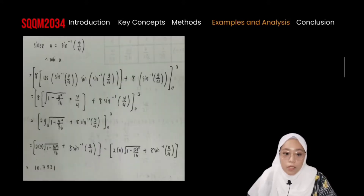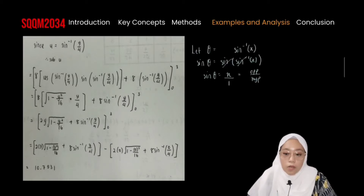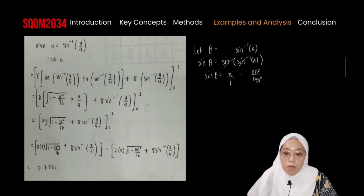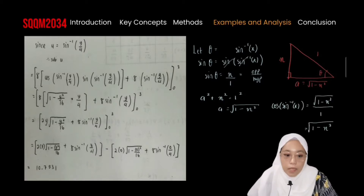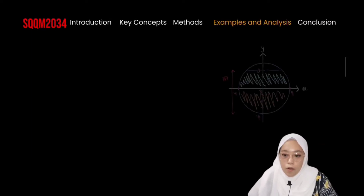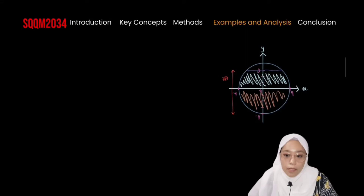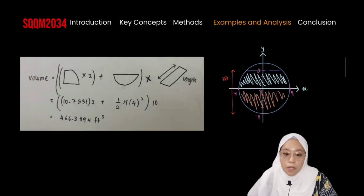Since u = sin⁻¹(y/4), we substitute back into the calculation. We found that the expression involves sin⁻¹(y/4) and cos. Using the inverse formula, we let sin θ = x/a and apply the Pythagorean theorem, where sin = opposite over hypotenuse. We draw the triangle and find the adjacent side: a = √(1 − s²). So, cos of sin⁻¹(θ) = √(1 − s²). Substituting back and integrating from −4 to 3, we get the area as 10.7531 square feet. To find the volume of the shaded area, we multiply by 2 (since both sides are the same shape) and add the semicircle using the formula ½πr², then multiply by the length of 10 feet. The volume of water in the tank is 466.3894 cubic feet.